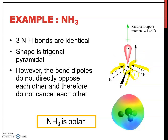Since the shape is unsymmetrical, the dipoles all go towards nitrogen, because nitrogen attracts electrons more than hydrogen. The bond dipoles cannot cancel each other. So it has a dipole moment — meaning the electrons are not uniformly distributed — making the molecule polar.